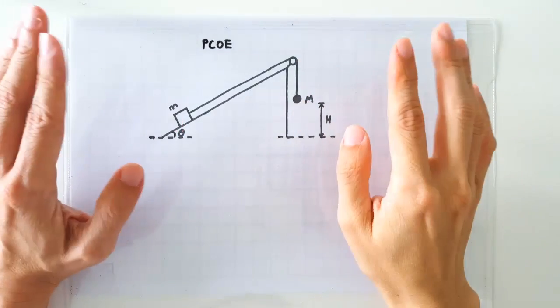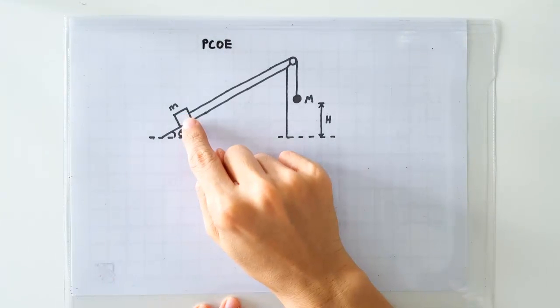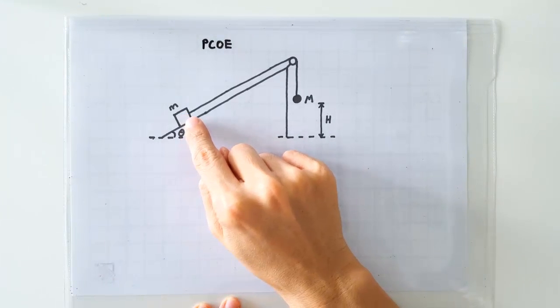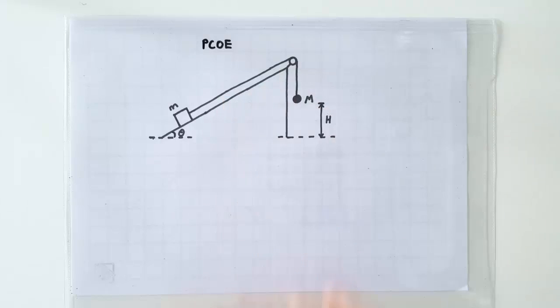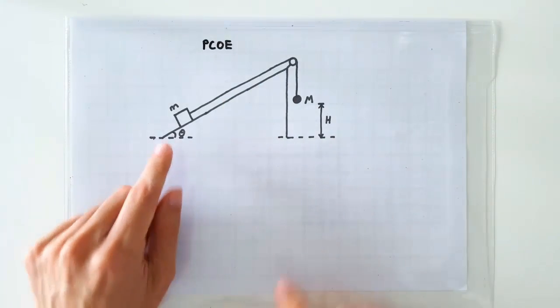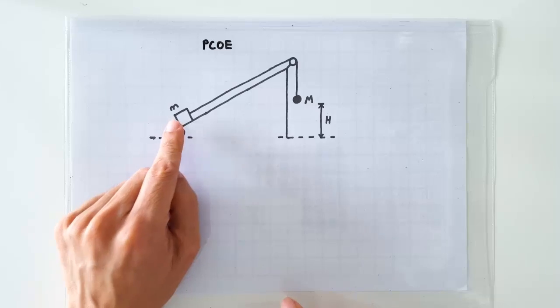So when the system is let go, obviously the wooden block is going to accelerate up along the slope. What's the easiest way to find the maximum speed of the wooden block?